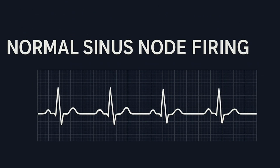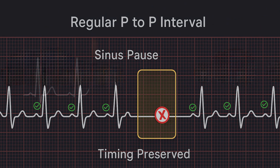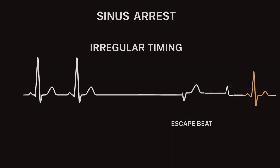Let us take a closer look at that on ECG. Here is a regular sinus rhythm — we see consistent P-to-P intervals. Then, a sudden break: no P wave, no QRS, flat baseline. In a sinus pause, the next P wave appears exactly where the next beat would have been if the rhythm had continued normally — suggesting the impulse was delayed but the node recovered quickly. But in sinus arrest, the next P wave comes late. The pause is not consistent with the previous intervals.